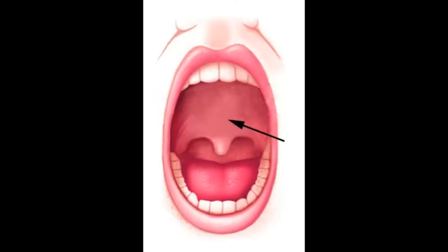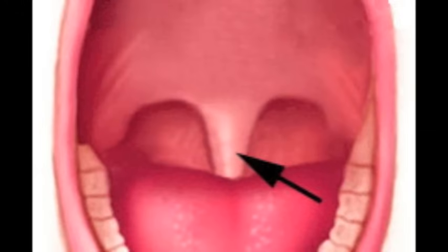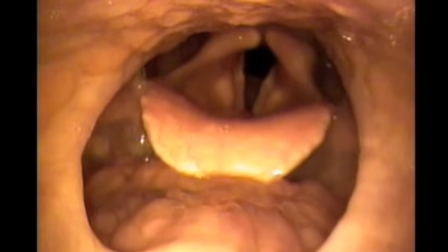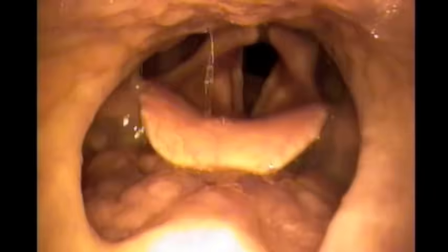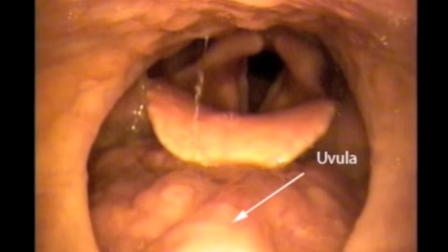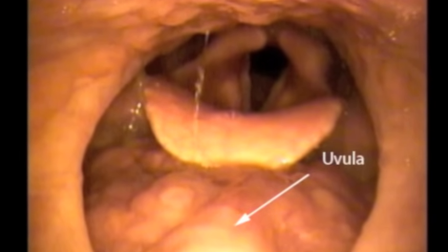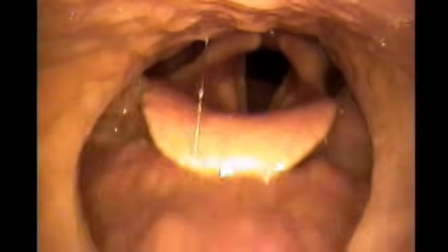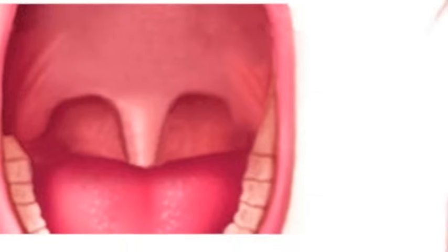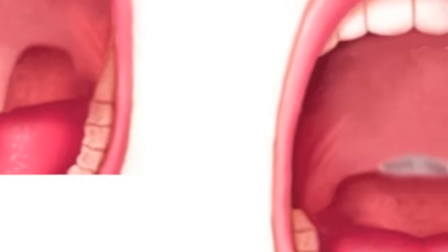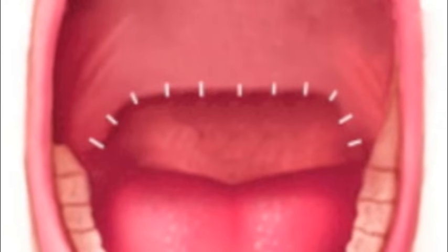A very common source of snoring is due to vibration of the soft palate or a very long uvula. Here is what a vibrating uvula causing a snore looks like from the inside. Treatment for this includes removing the uvula as shown here, or a UPPP.